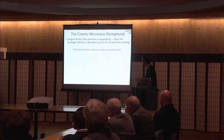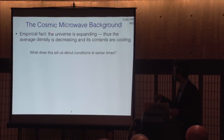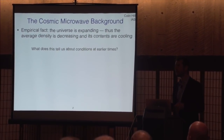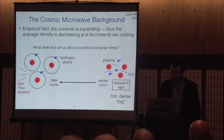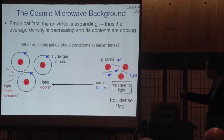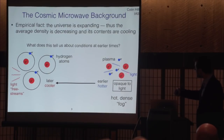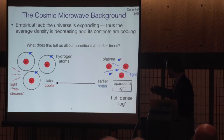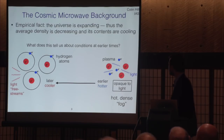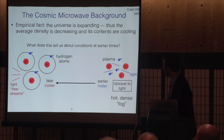If we hit rewind and ask what this tells us about conditions at earlier times — eventually, going back to an extremely early time, the temperature and density will be very, very high. Eventually it becomes so hot and so dense that the universe is actually opaque to light. Matter is organized into a plasma: protons and electrons, as well as photons of light, and these are so dense and hot that the photons are constantly scattering off of the electrons. It's a hot, dense fog.